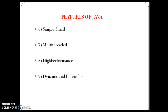The next feature is multithreaded. Handling multiple tasks simultaneously is called multithreading. Java supports multithreaded programs. A process can be divided into a number of threads and each thread can be given a different task to perform. Developing multithreaded programs in Java is very simple due to the inbuilt classes available in Java.